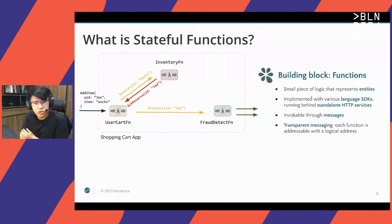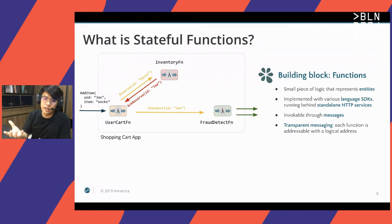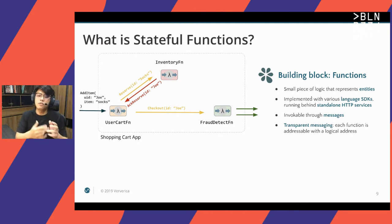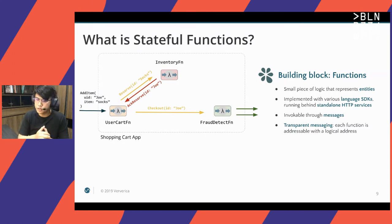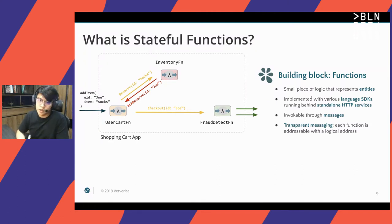One thing worth noting is that messaging between functions is completely transparent. For example, the cart function sending a message to the inventory function does not need to know the physical address of where the inventory function is deployed. We just need to know the logical address of where we want our messages to be sent. The logical address consists of two pieces of information: the type of a function, and the ID of the instance of that function. For example, one logical address would be 'inventory/socks', with 'socks' being the ID and 'inventory' being the type. All the routing of messages is completely transparent in user code space.